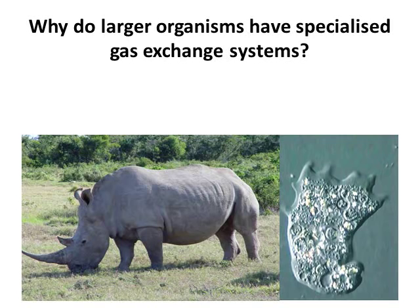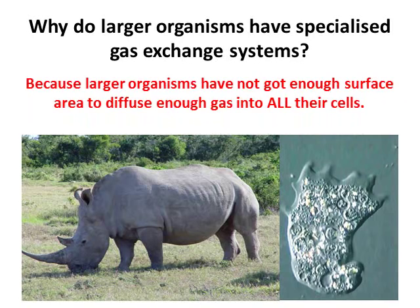Why do larger organisms require a specialised gas exchange system? Comparing a rhino to a single-celled organism like the amoeba — larger organisms don't simply diffuse gases in through their surface. The answer is that larger organisms haven't got enough surface area to diffuse gas through all of their cells. As with the small cube compared to the larger cube, the surface area to volume ratio decreases — so there's not enough surface for gases to reach all the cells, which is why larger organisms have evolved lungs and a transport system.